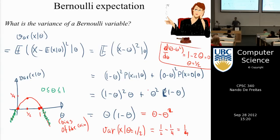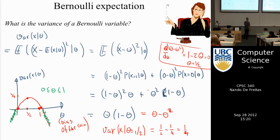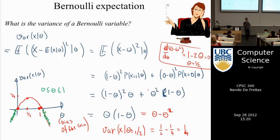Think of variance as a measure of uncertainty. If you have a coin whose probability of heads is a half, then you're very uncertain about what's going to be next — 0 or 1. But if the probability of 1 is 0.99, you'll quite likely say it's a 1, because you're very certain. So the closer theta is to 1 or to 0, the less the uncertainty, and that's essentially what that red curve tells us.